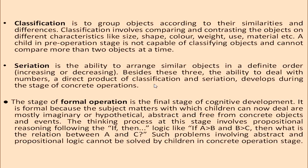Classification is to group objects according to their similarities and differences, involving comparing and contrasting objects on characteristics like size, shape, color, weight, use and material. A child in the pre-operational stage is not capable of classifying objects on more than one or two criteria at a time. For example, with red square blocks, red rectangular blocks, green square blocks, and green rectangular blocks, a pre-operational child can only classify by one or two criteria, whereas a concrete operational child can classify by size, shape, and multiple variations sequentially.